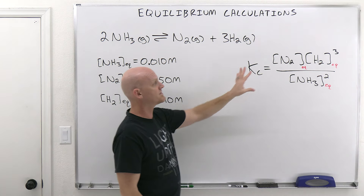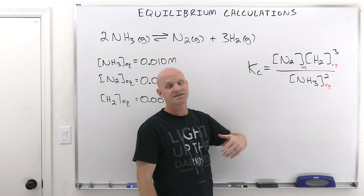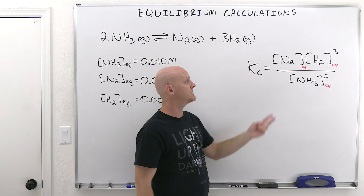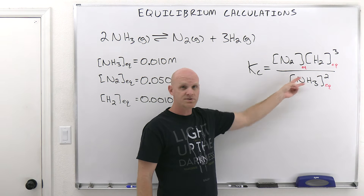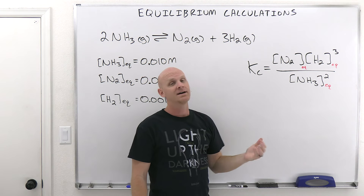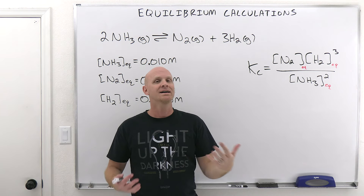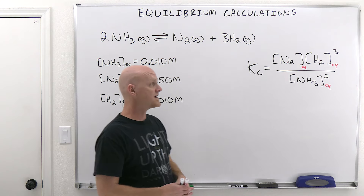The other way they could do this — there are really four variables in this equation; they just have to give you three. They could give you any two of the concentrations and the Kc, and ask you to solve for the other concentration. That's kind of the rub here, and we'll see how this is going to be different from some of the ICE table calculations in a little bit.